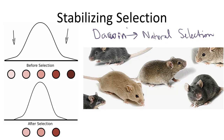One of the three ways in which natural selection can change populations is called stabilizing selection. It's a type of natural selection. Take a look at this bell curve illustrated on the left side of the screen.